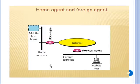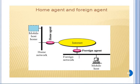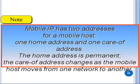The mobile host connects to its home network or a foreign network through the internet. Mobile IP has two addresses for the mobile host: one home address and one care-of address. The care-of address changes as the mobile host moves from one network to another network.